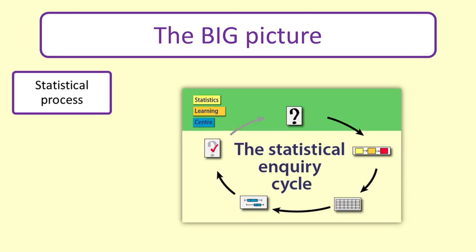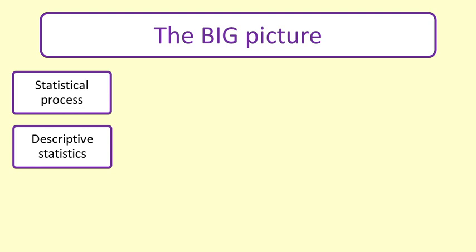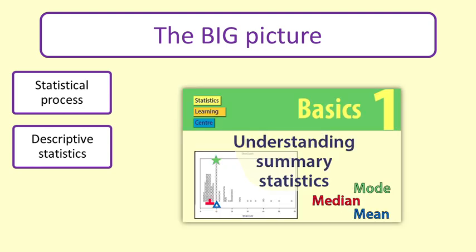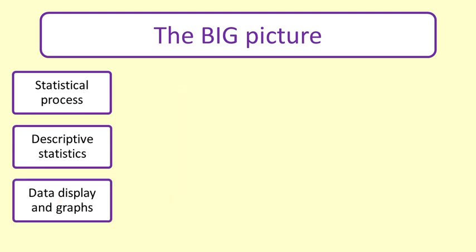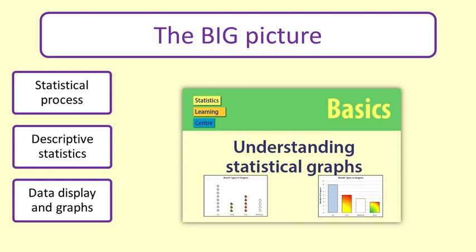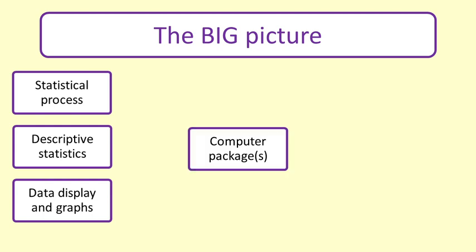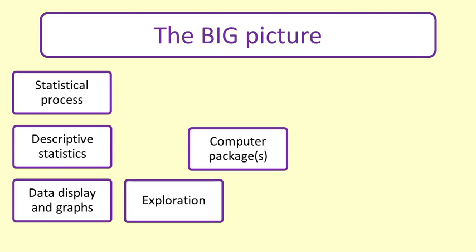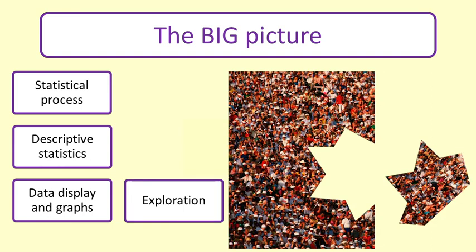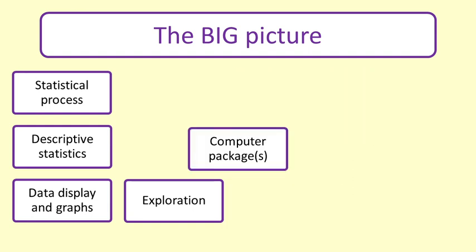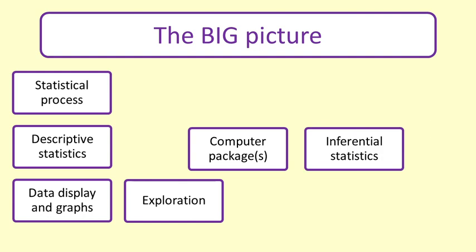The statistical process involves having a question or hypothesis, collecting data, and analysing and reporting it. As part of the analysis, you may do descriptive statistics, finding summary values and displaying data using tables and graphs. You may use computer packages or Excel to explore the data. If you have taken a sample and wish to draw conclusions about a larger population of people or things, then you will use inferential statistics.